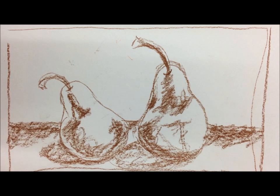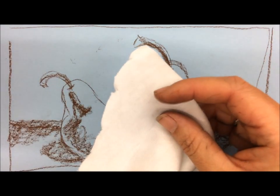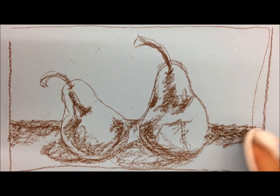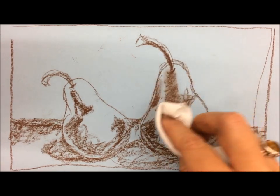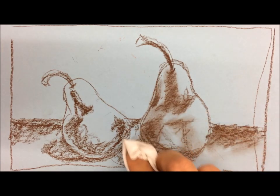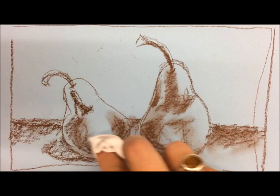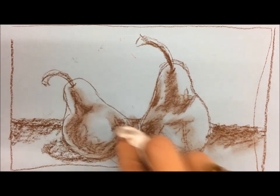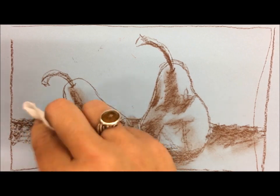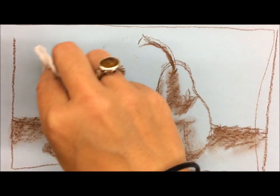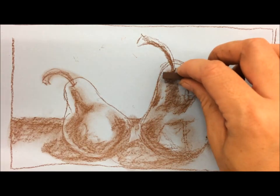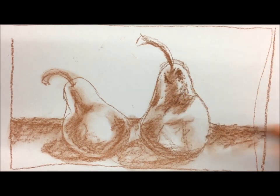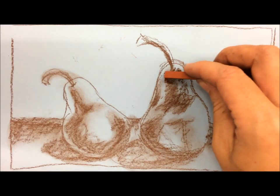Conté crayons do the smudge thing. Another thing you can use for smudging is an old strip of a t-shirt—you can wash it and keep reusing it. Notice how it doesn't smear as nicely or as evenly as the soft chalk pastels. You can still see the texture of the marks. That's one of the reasons I like Conté crayon—I like that rough texture. You don't lose the fact that it is a drawing material, not a painting material.